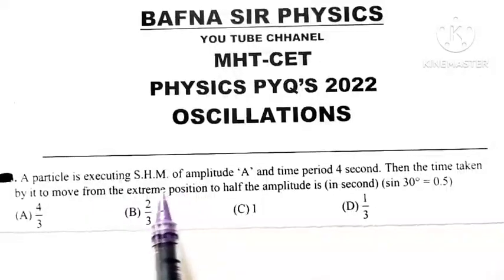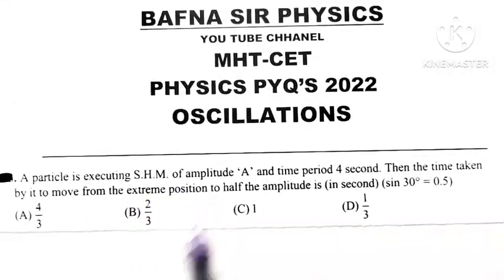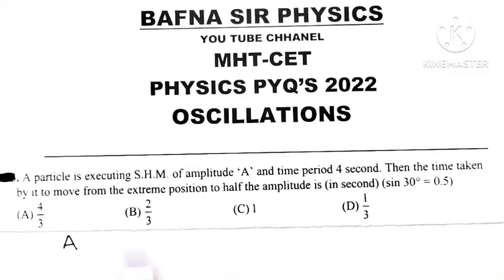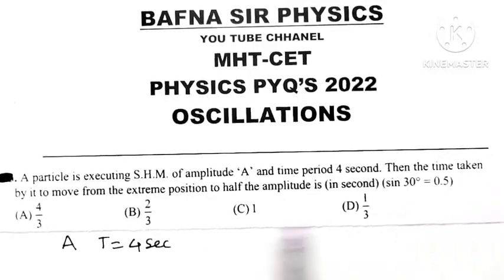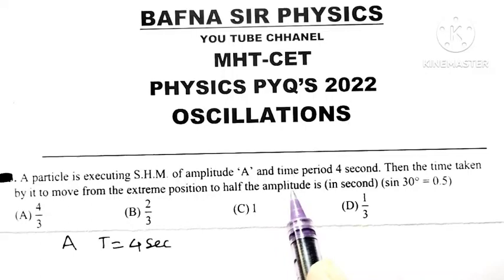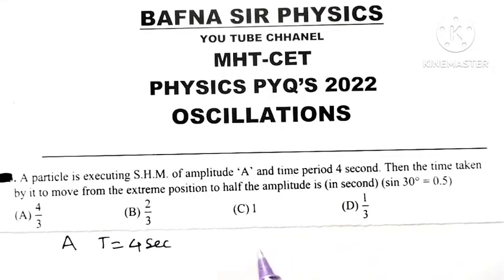A particle is executing simple harmonic motion of amplitude A and time period T equal to 4 seconds. Then the time taken by it to move from extreme position to half the amplitude in seconds.